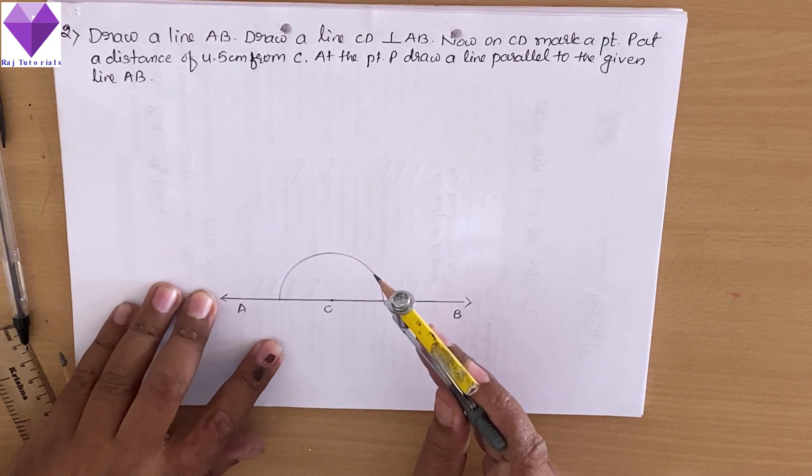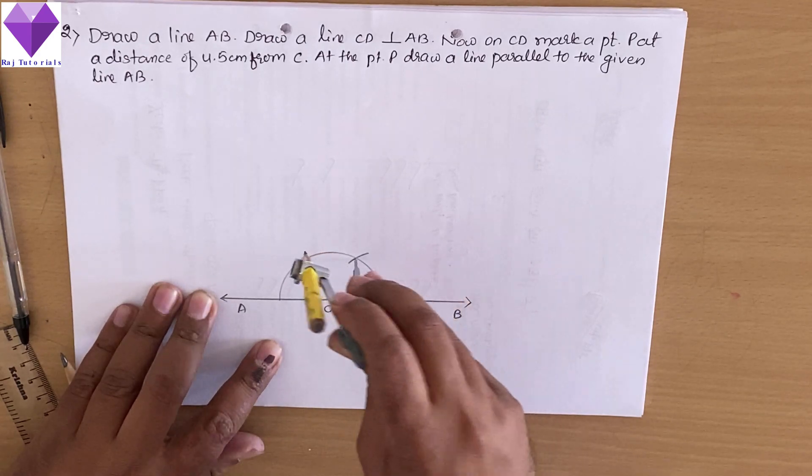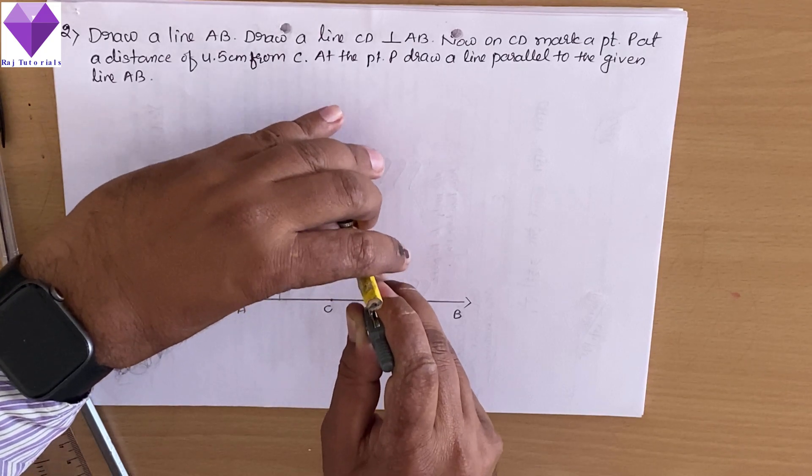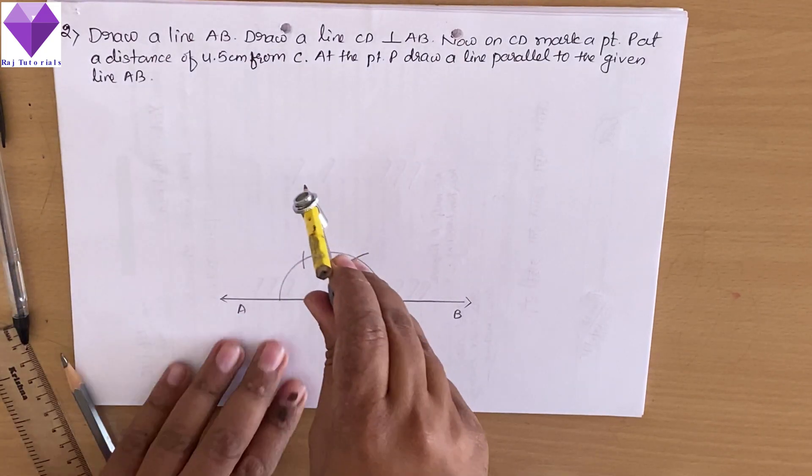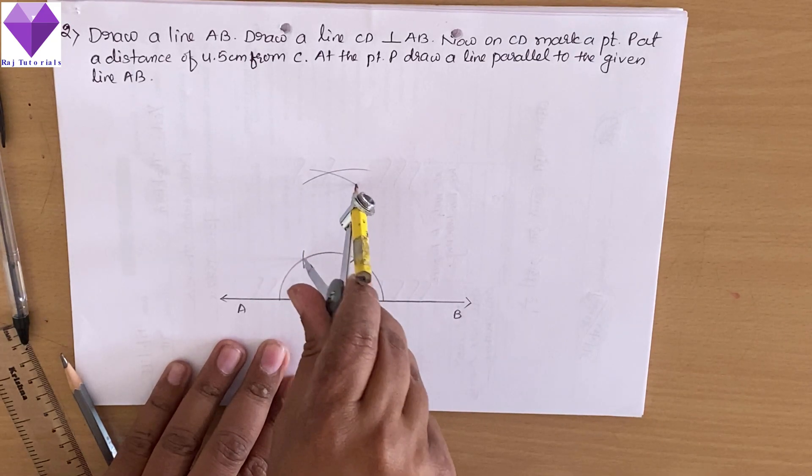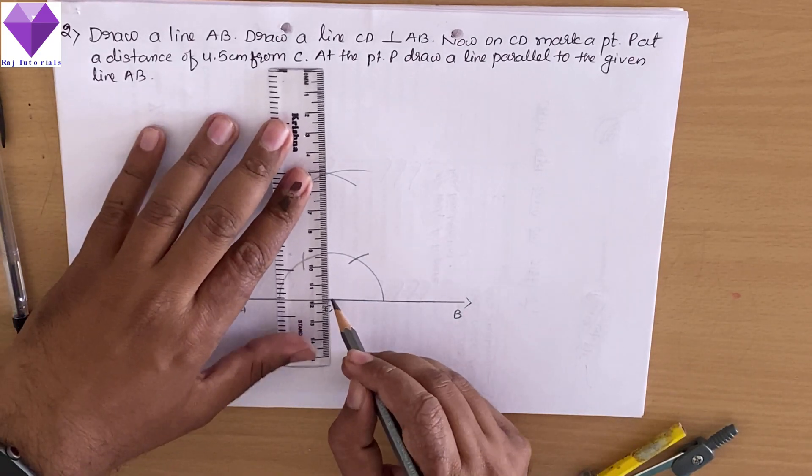With this point as center, I am drawing two arcs of the same radius. Now with these two arcs with any radius, I will cut out a perpendicular on this given line AB. Now I will join this with C point to get the perpendicular.